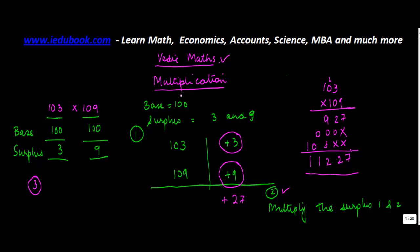Then comes step 3. In step 3, you will take either of these numbers. Let's say you take 109 and add the surplus of the other number to it. So let's say you take 109, you will add 3 to this which will give you 112. Alternatively, you could have taken 103 plus 9, which again will give you 112.